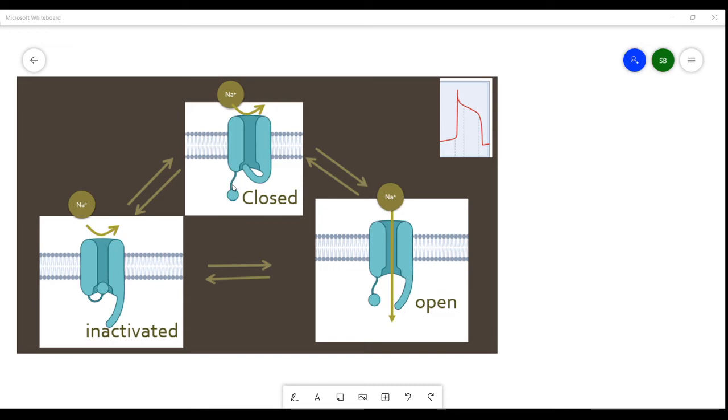Part of the protein extends into the cytoplasmic side of the cell and this ball is able to dock in the channel in order to close it.